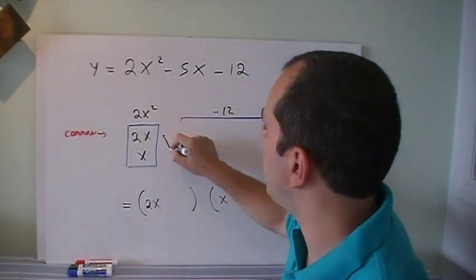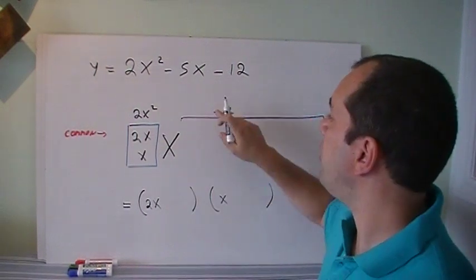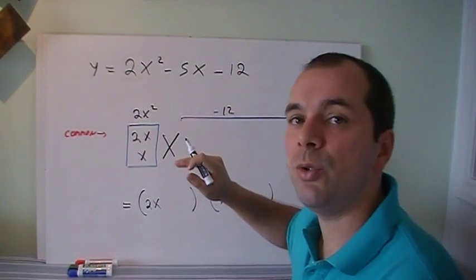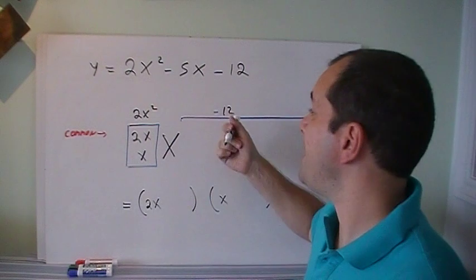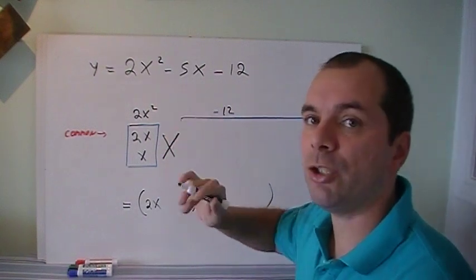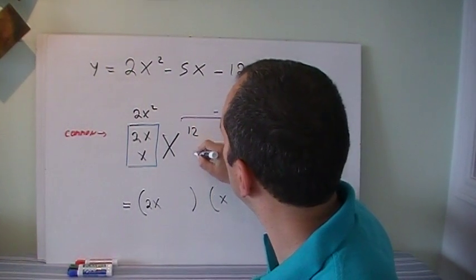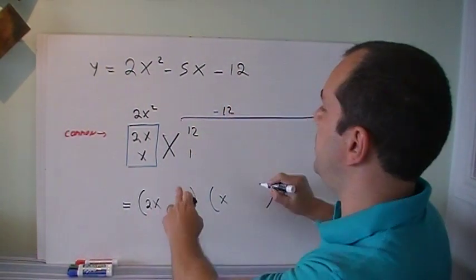Now, we're going to draw a cross to remember that we're going to cross multiply, and we're going to find out all the numbers that multiply to 12. I know it says negative 12 over there, so later on we're going to have to put 1 plus, 1 minus, but right now let's just concentrate with 12. So we got 12 and 1.